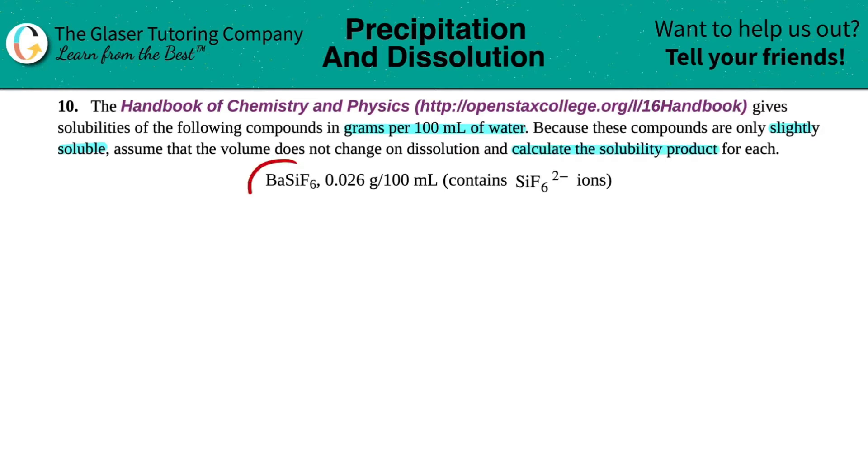In this example, we have BaSiF6. They give us the solubilities of 0.026 grams per 100 mils, and they give us a little hint that this contains the SiF6 2- ions.